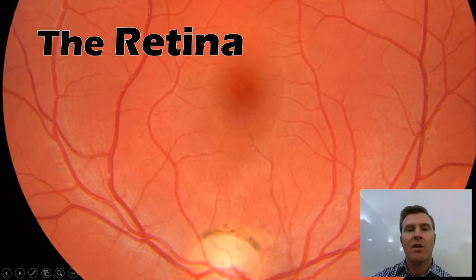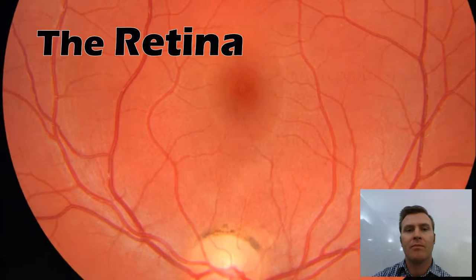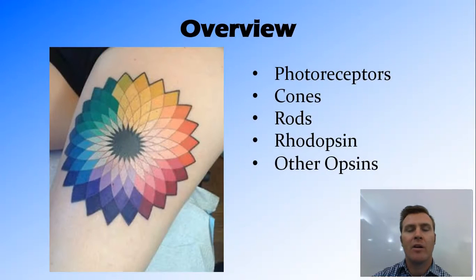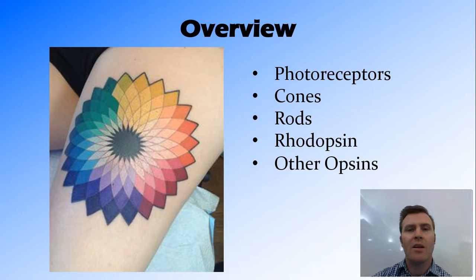Hi guys, in this video we're going to look at the retina in a little bit more detail. We're going to talk about the photoreceptors found in the retina and the two types of photoreceptors — the cones and rods — and then the photopigments that allow those receptors to work.